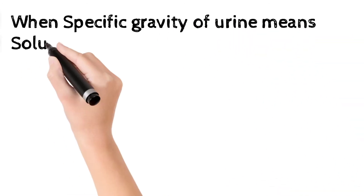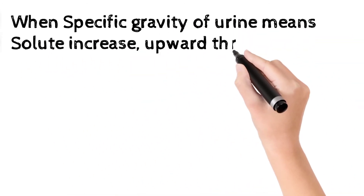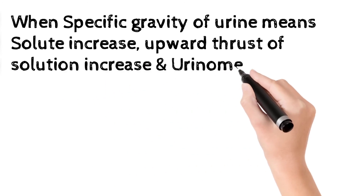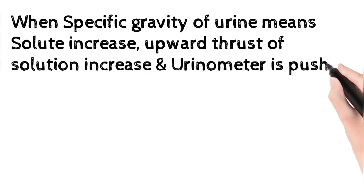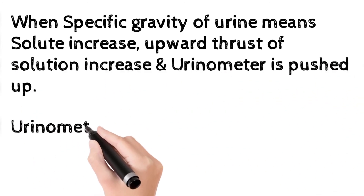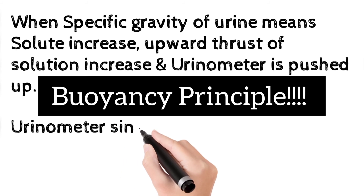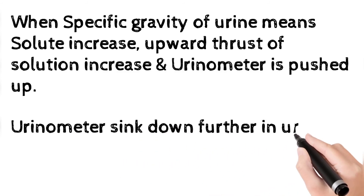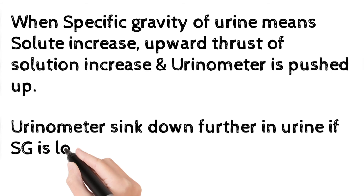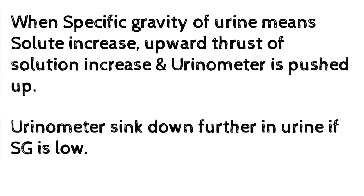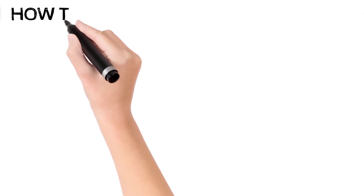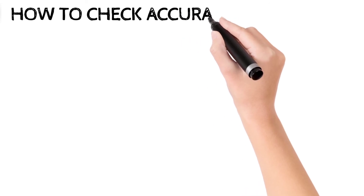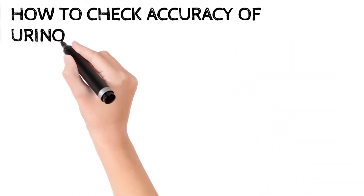When the specific gravity of urine increases — meaning solute concentration is high — the upward thrust on the solution is increased and the urinometer is pushed up, giving a high specific gravity reading. Exactly the opposite: when specific gravity is less and solute is less, the urinometer will sink down. That is the principle of urinometer use.